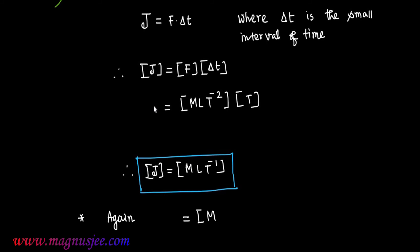Also the dimension of a certain physical quantity is MLT^-1 and that certain physical quantity will be linear momentum p. Therefore, dimension of J is equal to dimension of p or dimension of linear momentum.